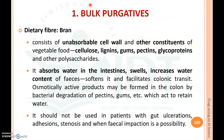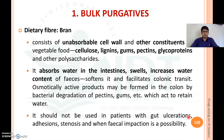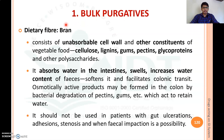The first classification of laxatives is bulk purgatives — dietary fibers and bran. These consist of unabsorbable cell wall and other constituents of vegetable foods like cellulose, lignin, gum, pectin, glycoproteins, and other glycosaccharides. Their mechanism of action involves absorbing water in the intestine, swelling, increasing the water content of the feces, softening it, and facilitating colonic transit. Osmotically active products may also be formed in the colon by bacterial degradation of pectin, gum, etc., which act to retain water.